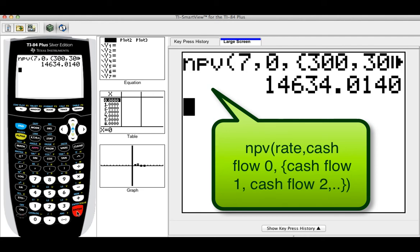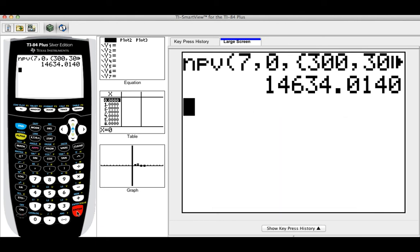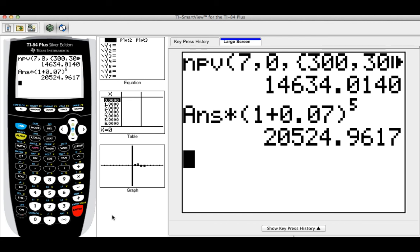I got my net present value. This amount is going to be at the beginning of the period, but I need the future value. So I just multiply this by one plus 0.07, because remember, I need to bring all this all the way to the last fifth year. And this is a single cash flow. So the future value is going to be 20,524.96. And that's how easy it is.